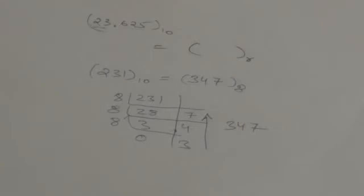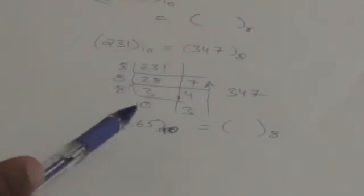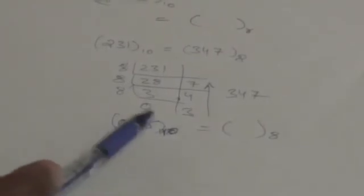Now we will learn how we can convert a fractional decimal number into a number of a different base. Suppose there is a number 0.65 and we want to convert it into a number whose base is 8. Here we will multiply it by the base, and when we multiply it by the base we will get an integer part and a fractional part. We have to separate the integer from the fraction and multiply the fraction again by 8, repeating this procedure until the fraction becomes 0 or until we have sufficient accuracy.